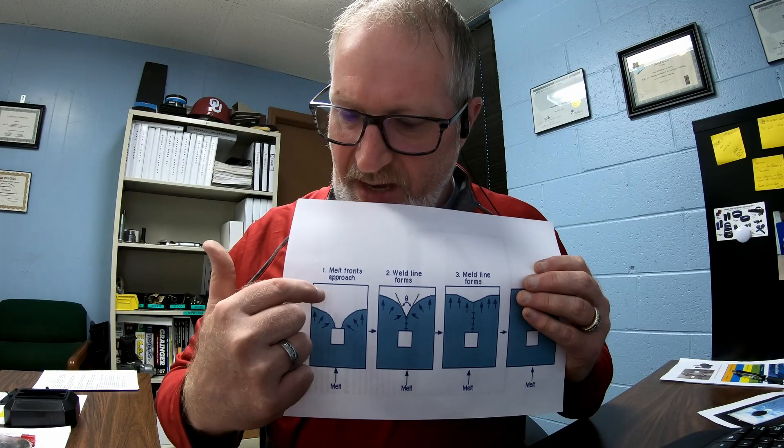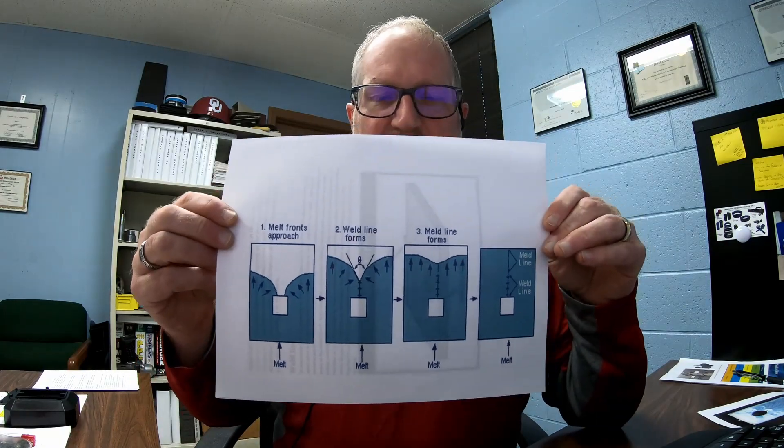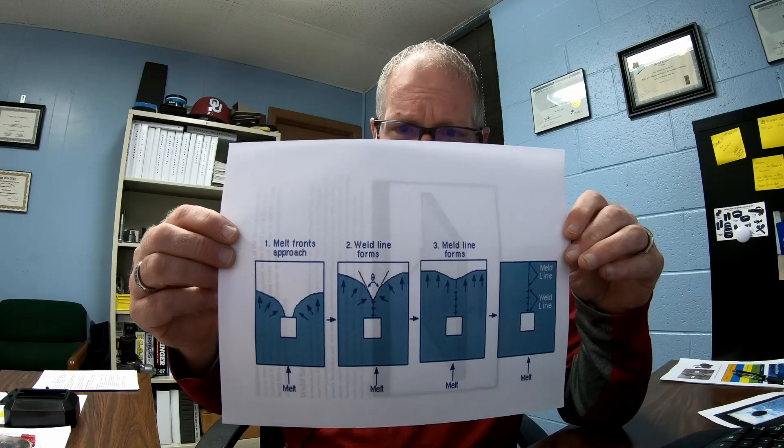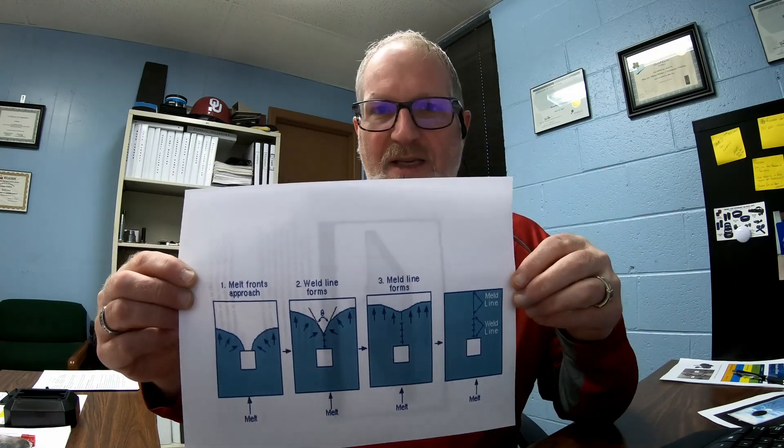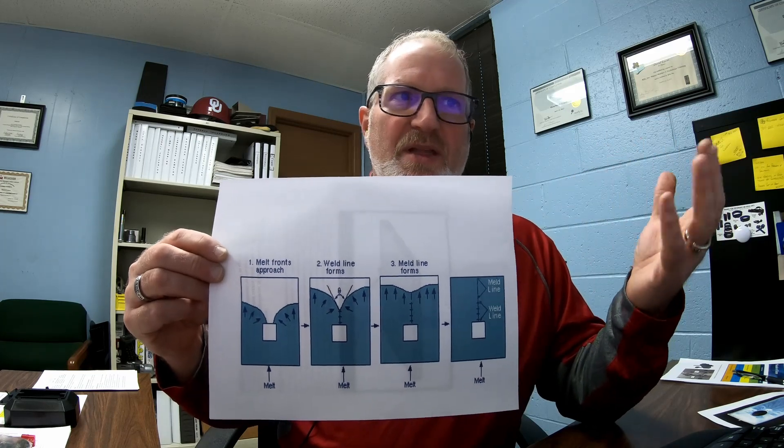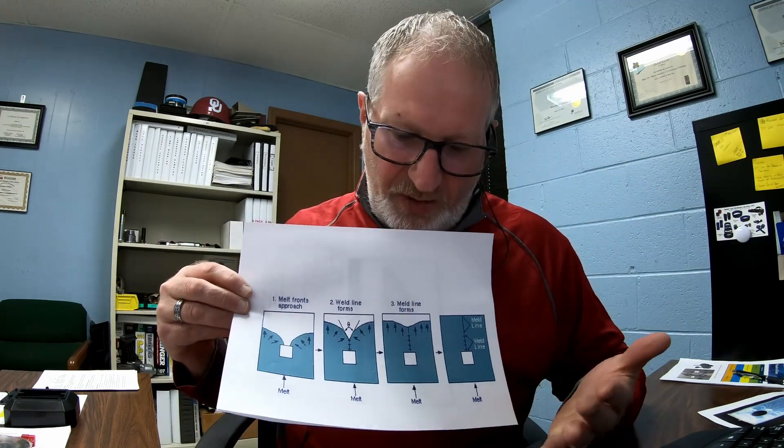The material flows in from here, goes around this boss, and you get two flow fronts where the material is actually flowing into that area, which creates a knit line right in the very center of that part. You can see in the flow pictures how the material travels through there. In tool design, you sometimes can't get away from it — it's always going to be there. You can hide it and make it more faint, but you never get rid of them completely.